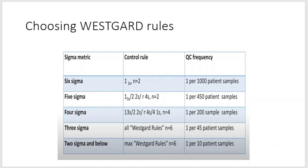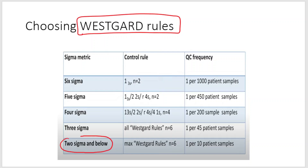How do you choose Westgard rules based on sigma? If an analyte gives 2 sigma or below 2 sigma performance, you should run 6 controls, and in what frequency? 1 QC per 10 patient samples. So look at how frequent you have to run QC in this case — whenever your method has shown poor performance, you have to run 6 controls, 1 per every 10 patient samples. The frequency is really very high.